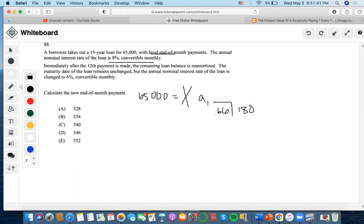Now let's calculate X. So I could do 65,000 as the present value, 0.66 at the interest rate, 180 as the number, 0 future value. Let's compute payments. Payment's going to be 618.18.